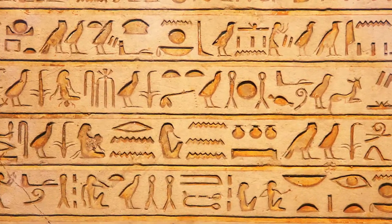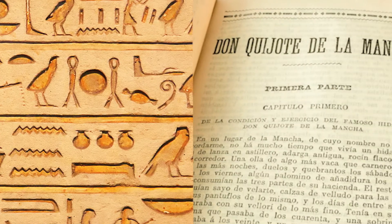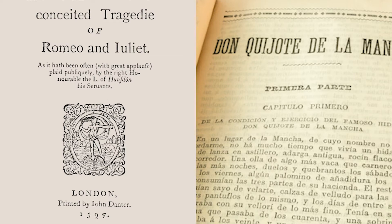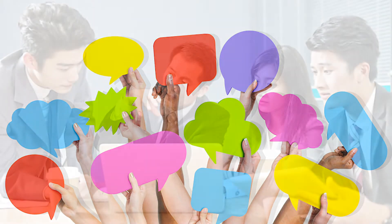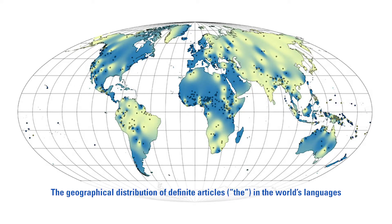Human languages never stop changing — as anyone who's read works of literature from centuries ago knows. But written records provide a frustratingly incomplete picture of the evolution of language. How can linguists figure out which sounds and grammatical structures stay in a language for millennia, and which ones are more short-lived, showing up in one historical period and disappearing in the next? It turns out that math offers some powerful tools that researchers are now using to study the past and future of languages.